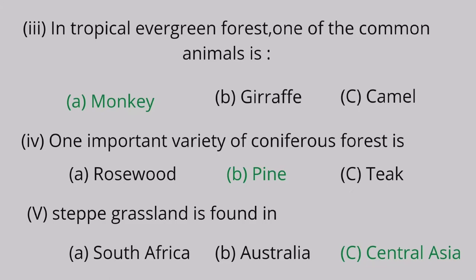Question 3: In tropical evergreen forest, one of the common animals is A. monkey, B. giraffe, C. camel. Monkey is the correct answer. Question 4: One important variety of coniferous forest is A. rosewood, B. pine, C. teak. The correct answer is pine.